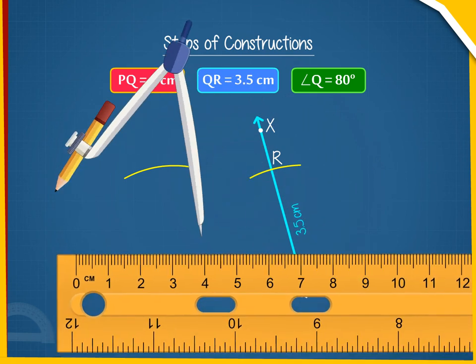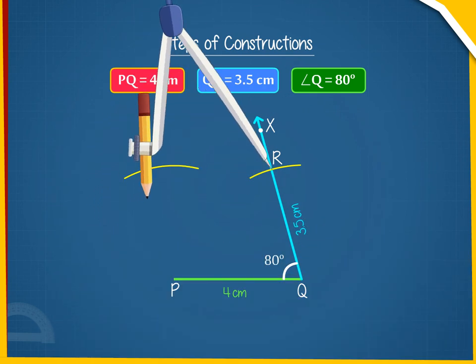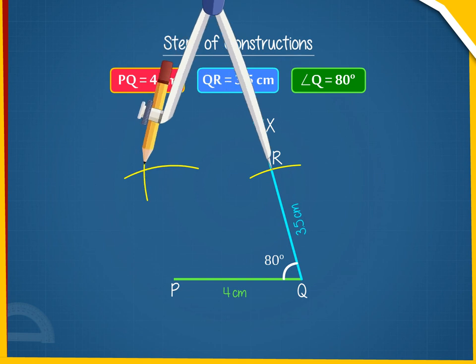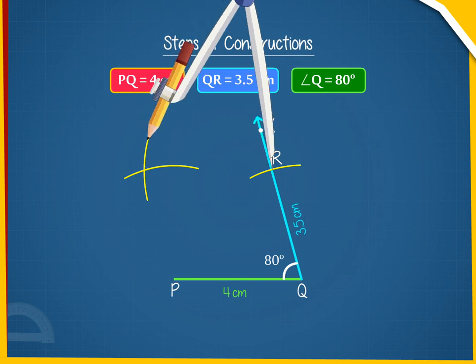E. Take R as center and radius 4 cm, draw an arc, cutting the previous arc at S.